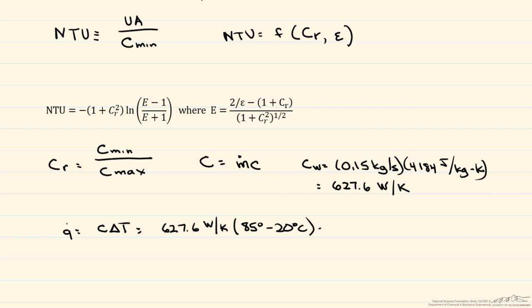So this is equal to 627.6 watts per K times the difference in temperatures, which is 85 minus 20. This is in degrees Celsius. Our Q dot is equal to 40,794 watts. We assume a well insulated system, heat exchanger should be well insulated.